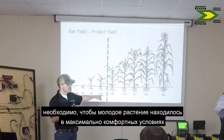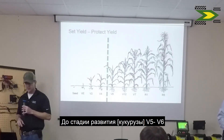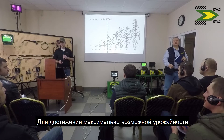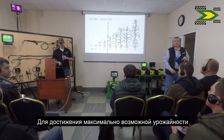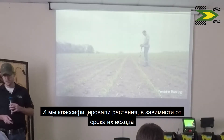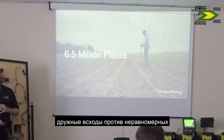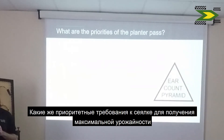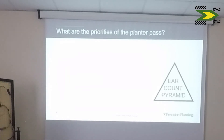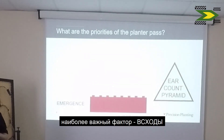I need the young plant to do very, very well up through that V5, V6 stage of the corn plant to set the maximum yield potential. Ones that emerged all together — even emergence versus late emergence — what are the most important things for the plant to set the most amount of yield possible? The very first building block, the most important thing, is emergence.